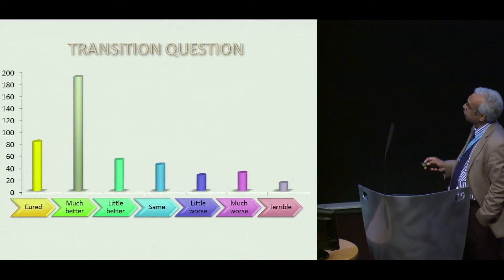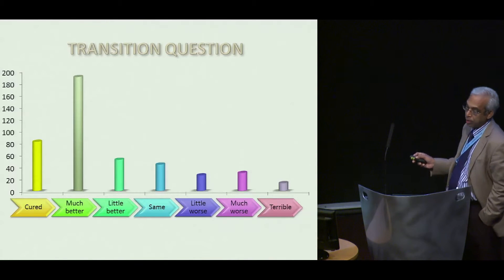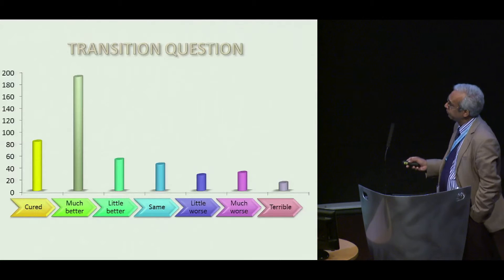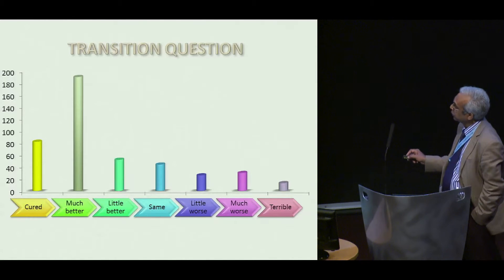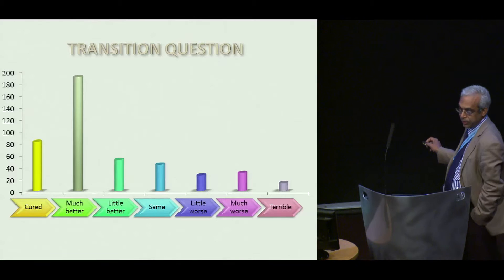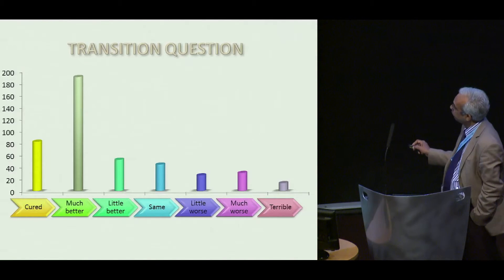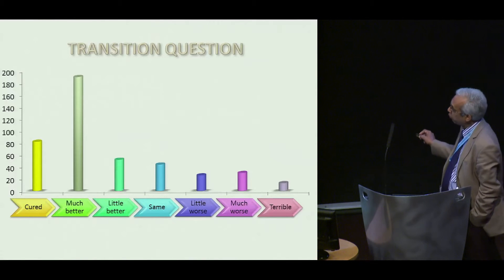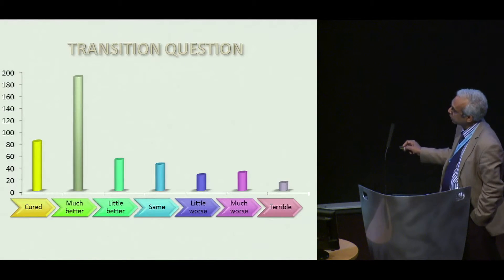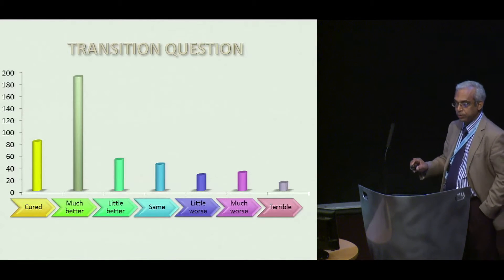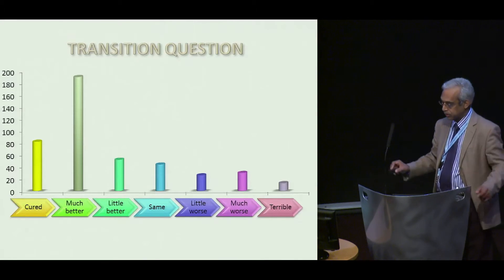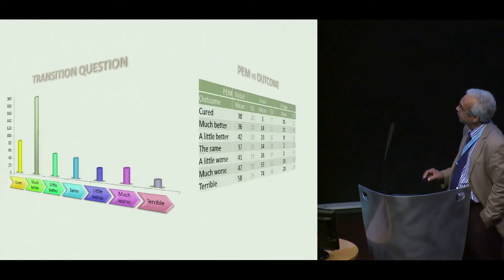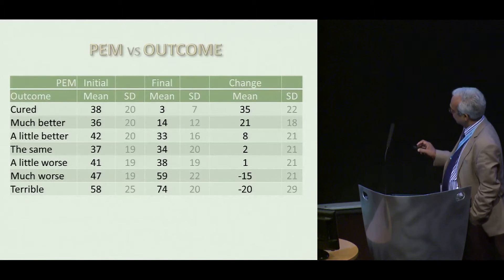Here's the transition question. We asked the patients how they considered themselves compared to what they were before, from being cured at one end to terrible at the other end. The groups from the same to terrible are where you've left them either with no change or worse than before, and the others are the ones that improved. So you can divide the outcome into two groups: better, or no better or worse.